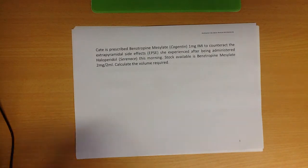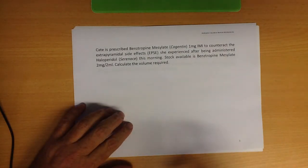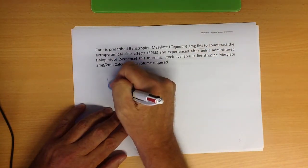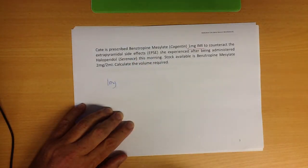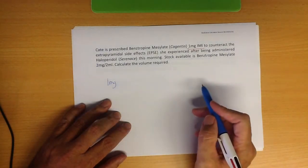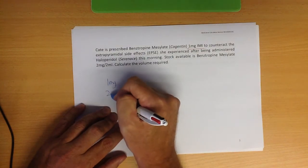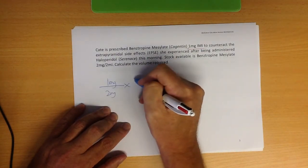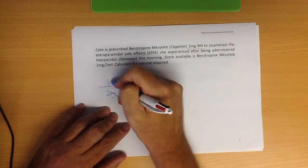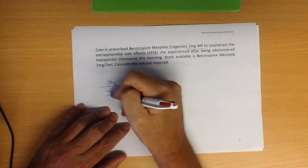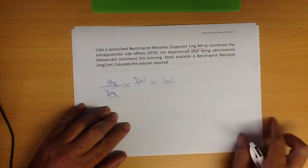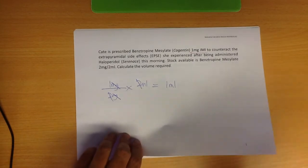Moving on to number 3. Kate is prescribed benztropine 1 milligram IM to counteract the EPS that she experienced after being administered haloperidol this morning. Stock available, what we want is 1 milligram, what we've got is 2 milligrams by 2 mils. So all we need to do there is get rid of the milligrams, cross them out, and get rid of the 2s, cross them out, and there's our answer. One milliliter is the volume required. Again, simple maths, just make sure you read the question.